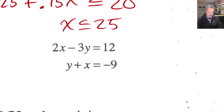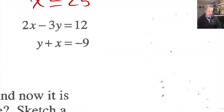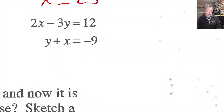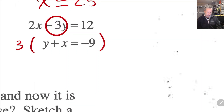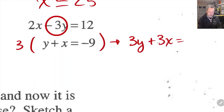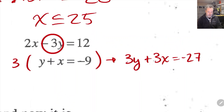Question 73 says: solve this system of equations algebraically. I'm going to solve using elimination. I can see I've already got a negative 3y, so I'm going to multiply the bottom equation by 3. When I do that, this equation becomes 3y plus 3x equals negative 27, and the other equation stays the same: 2x minus 3y equals 12.